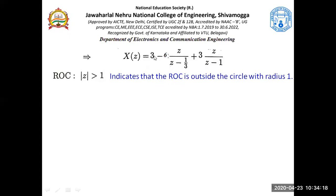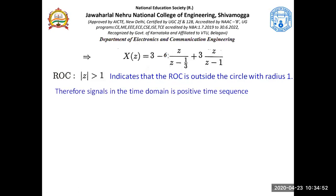For the constant term, looking at the region of convergence is not necessary. But for the other two terms it becomes necessary. Since the ROC is outside the circle with radius 1, we associate positive time exponentials for both those terms. Therefore, the signals in the time domain are positive time sequences.